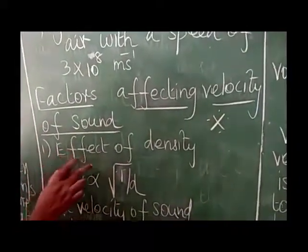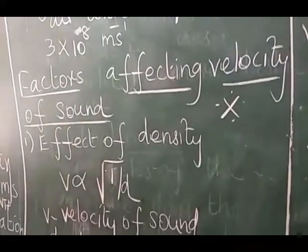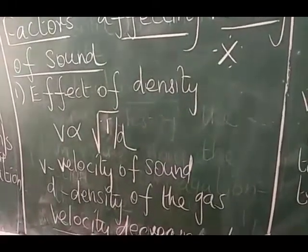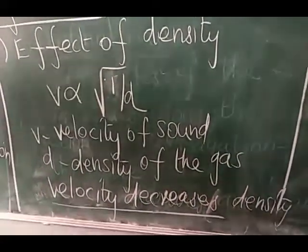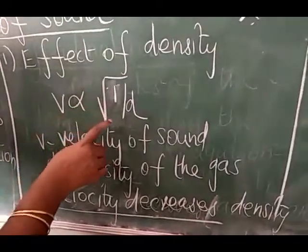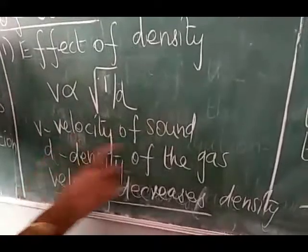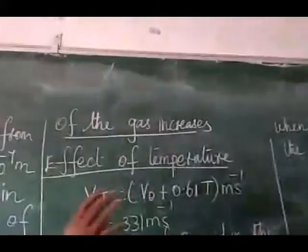Another two more questions. Factors affecting the velocity of the sound. First one, effect of density. Velocity of sound in a gas is inversely proportional to the square root of density of the gas. V is inversely proportional to square root of density. V is the velocity of sound. D is the density of the gas. Velocity decreases, density of the gas increases.